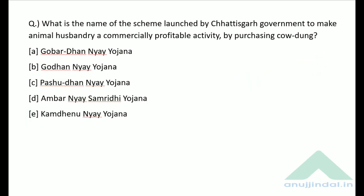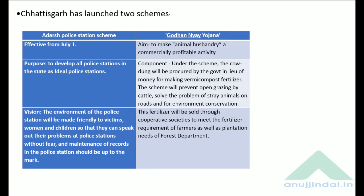What is the name of the scheme launched by the Chhattisgarh government to make animal husbandry a commercially profitable activity by purchasing cow dung? The correct answer is option B — Godhan Nyay Yojana. In addition, the Chhattisgarh government also launched an Adarsh Police Station scheme to develop all police stations as ideal police stations.